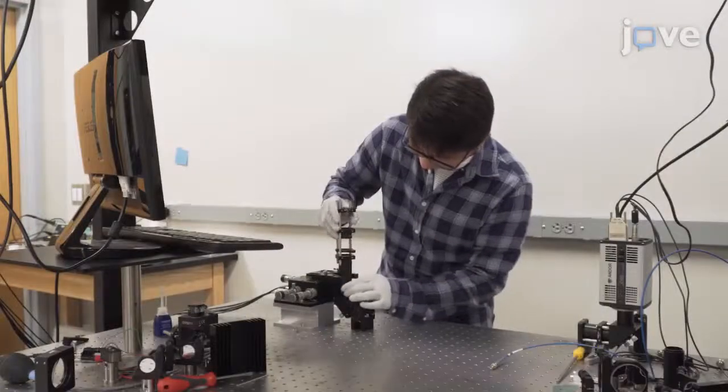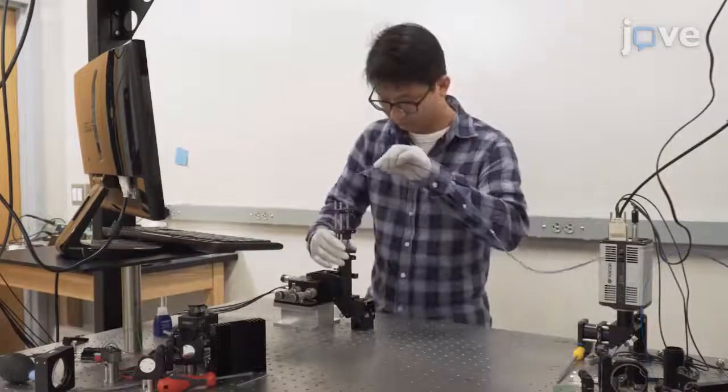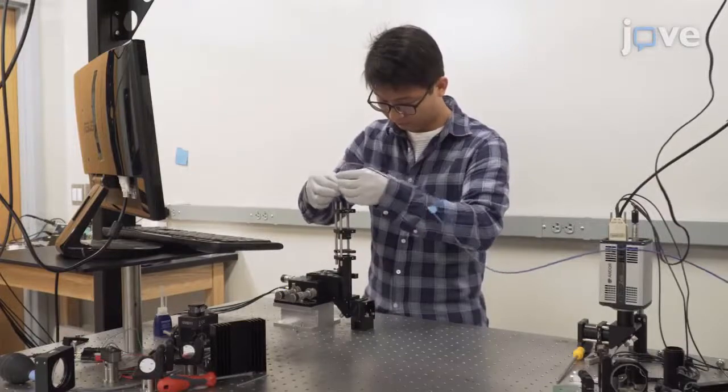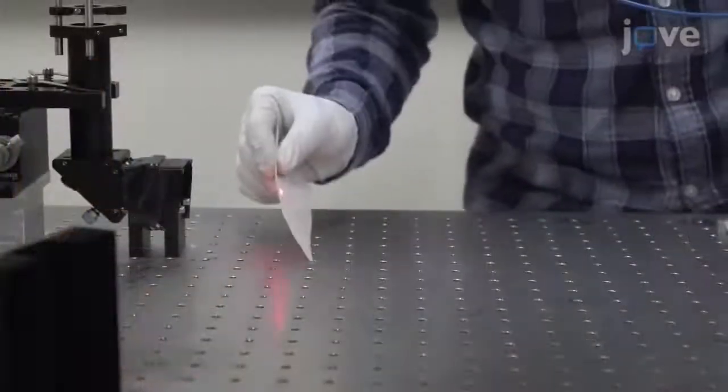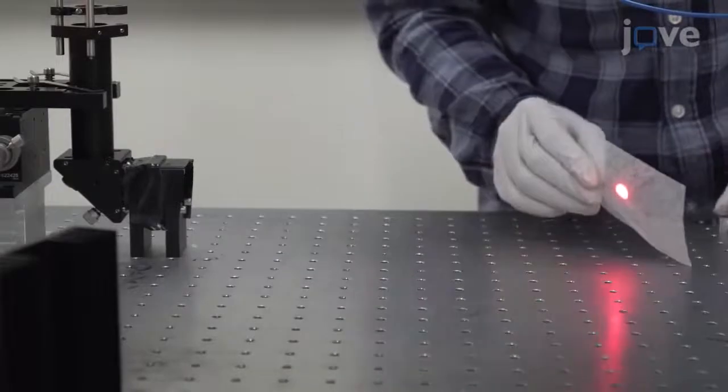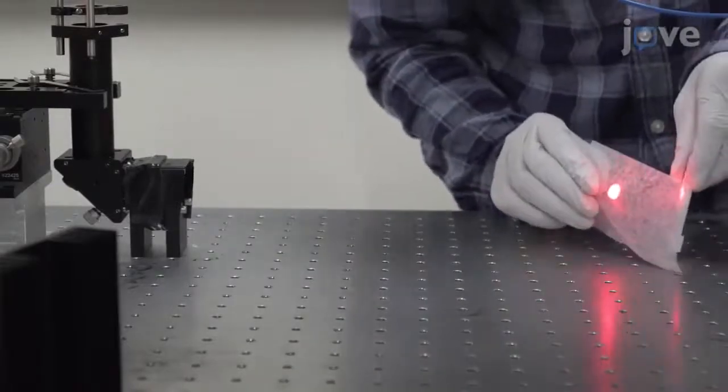Begin work with the detection path. First, place the collimated light source in the microscope body's objective port. Adjust the mirror beneath the objective so the output beam is roughly horizontal and aligned with the bench's holes.